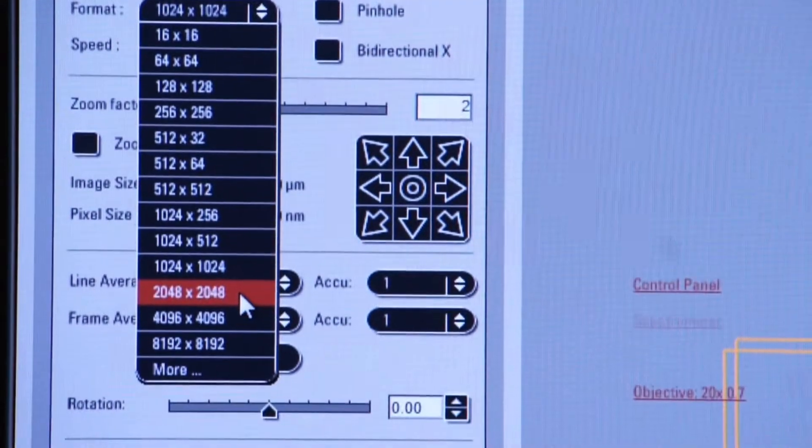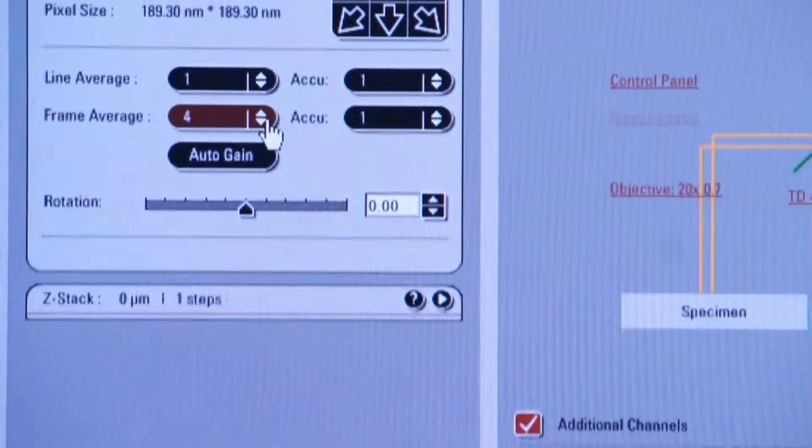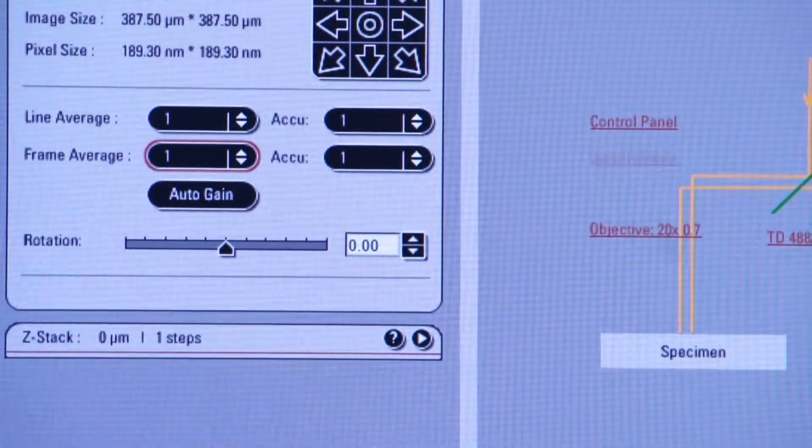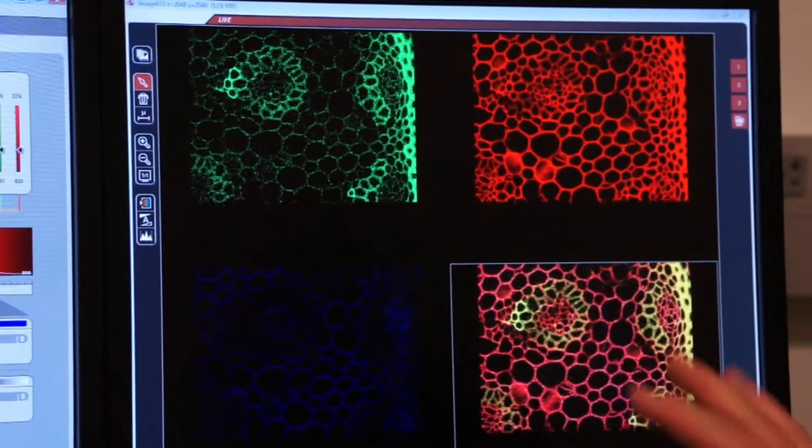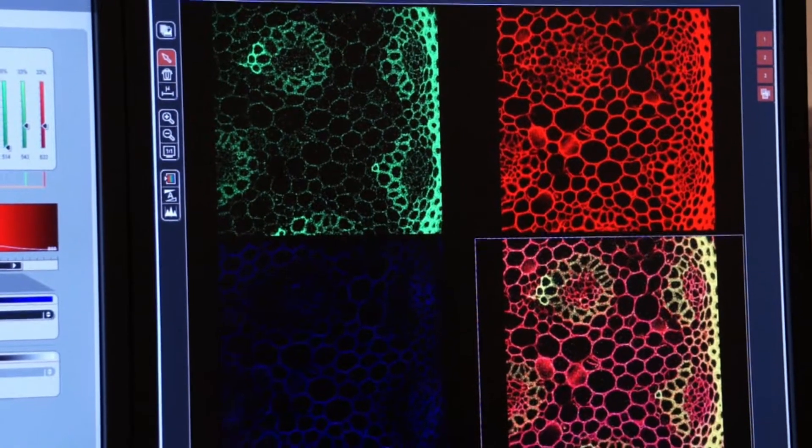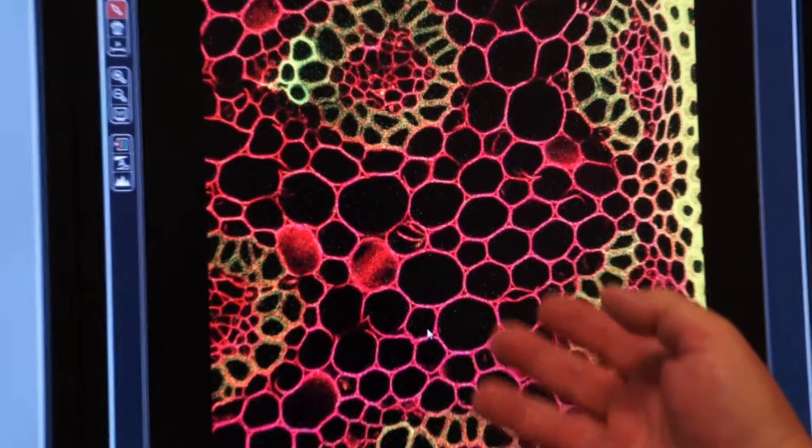Let's do a 2k by 2k image and we will change frame averaging back to one. Let's just capture an image at 2k by 2k and you'll see how grainy this is. But you might say, well Mark, we increased our resolution. How can it be grainy?